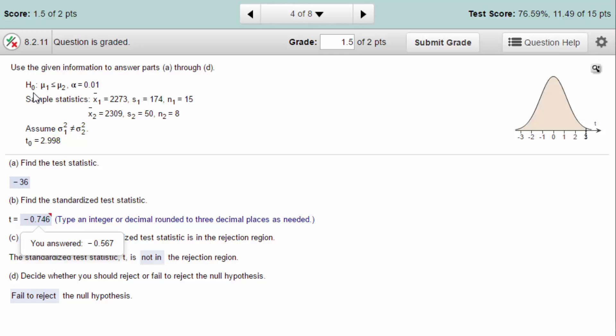We're given that the null hypothesis is mu1 less than or equal to mu2. If the null is less than or equal, that means the alternative has to be mu1 is greater than mu2, which is the complement of less than or equal. We're given an alpha of .01 and we're given sample statistics.